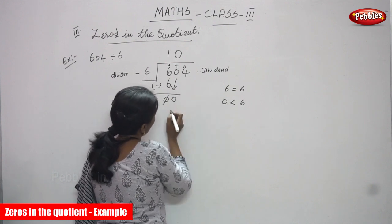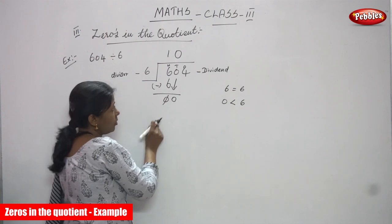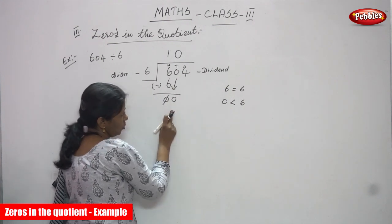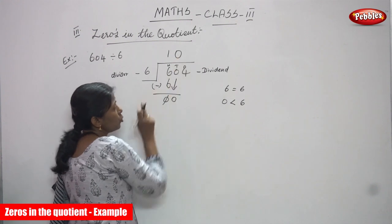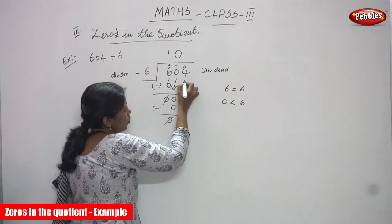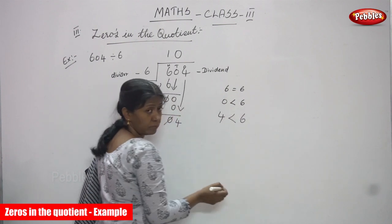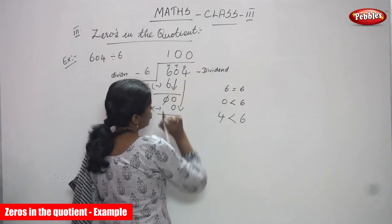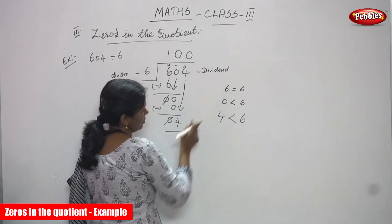Next, bring down the 0. 6 minus 6 gives 0 — cancel the 0. Again 0 is compared with 6; it's not enough to divide, so put 0 in the quotient place. 6 into 0 is 0, and 0 minus 0 is 0 — cancel it. Now bring down the 4. 4 is compared with 6. 4 is less than 6, so 4 is not enough to divide by 6. Put 0 in the quotient place — that is the 1's place. 4 — you have to stop, because there is no number hereafter.